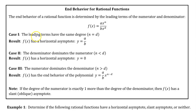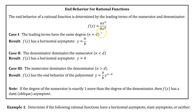Case 1: if the leading terms have the same degree — in other words, n equals d — then f has a horizontal asymptote y equals a over b. We're dividing the leading coefficients, and that's going to give you the end behavior.